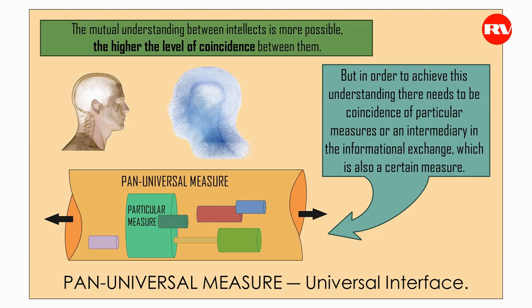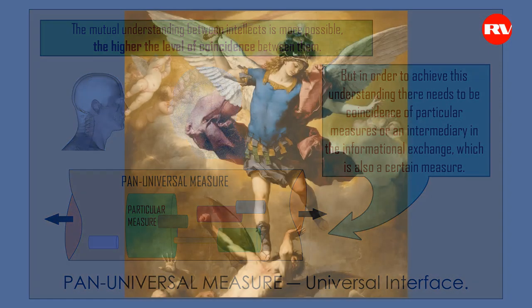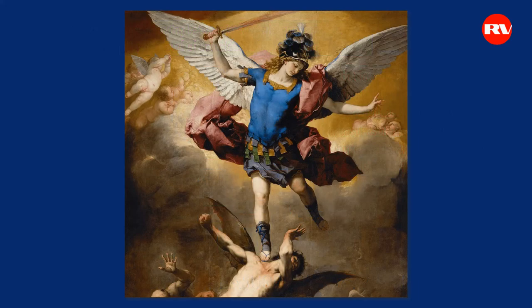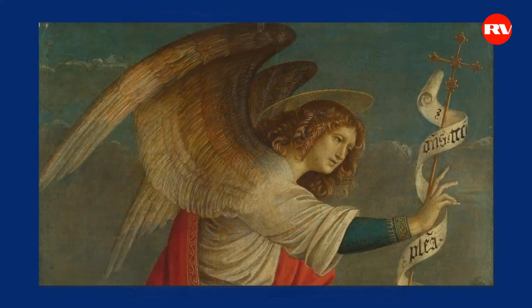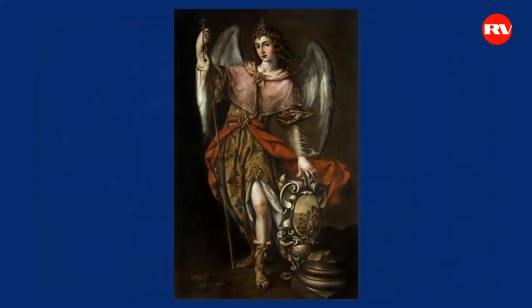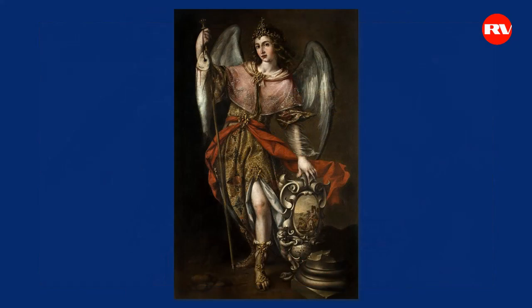Coincidences necessary for mutual understanding of intellects are on the basis of material carrier, on the basis of frequency range of structures that exist and that are carriers of intellect. This topic will be more understandable when we talk about egregors. There exist biofile structures with which mainstream science does not deal and does not even want to deal. But these biofile structures play a very important role in the life of mankind and every single person. What are called angels and archangels in Abrahamic religions — Islam, Christianity, Judaism — are in essence biofile structures which possess intellect and collective intellect.